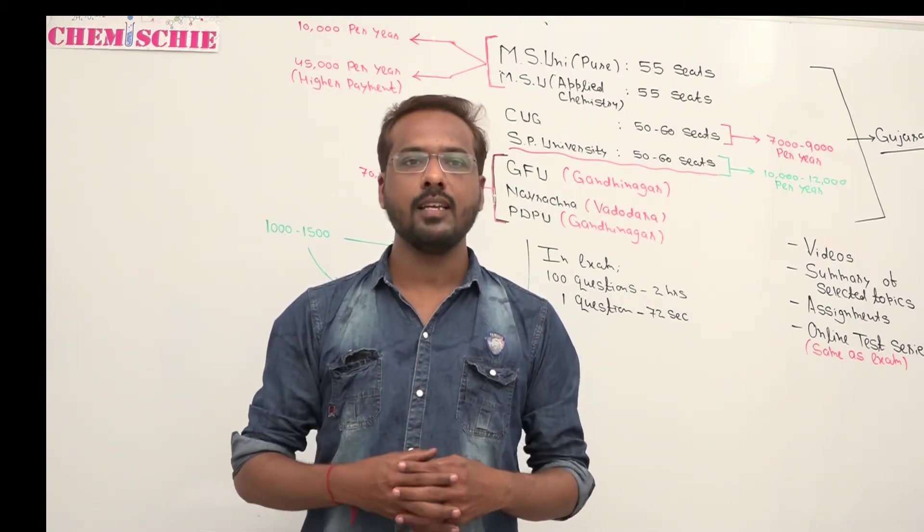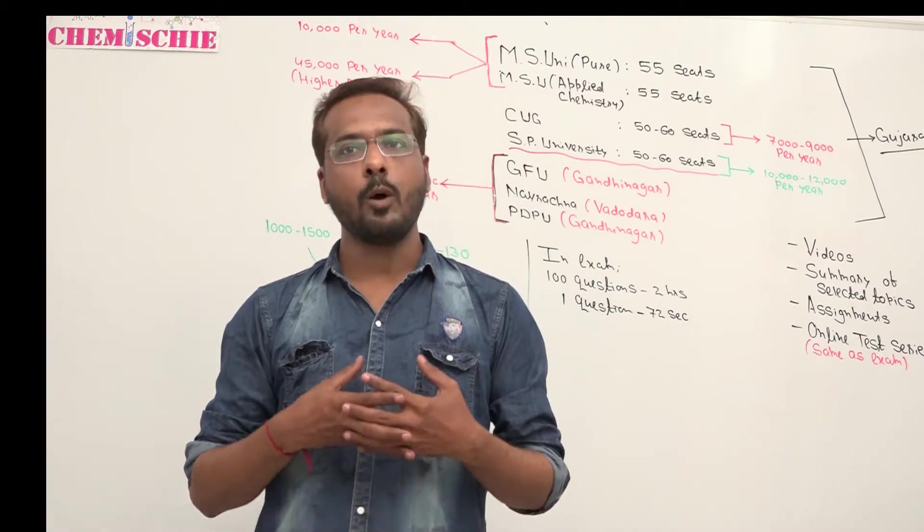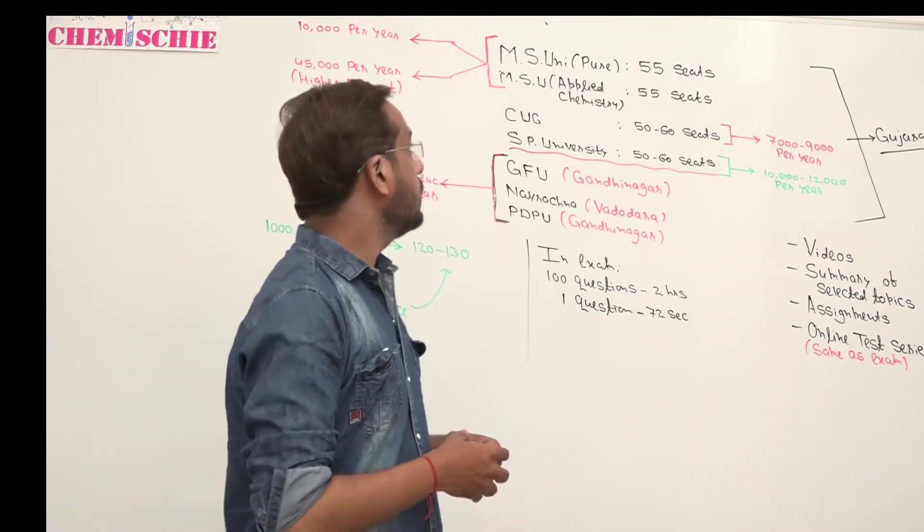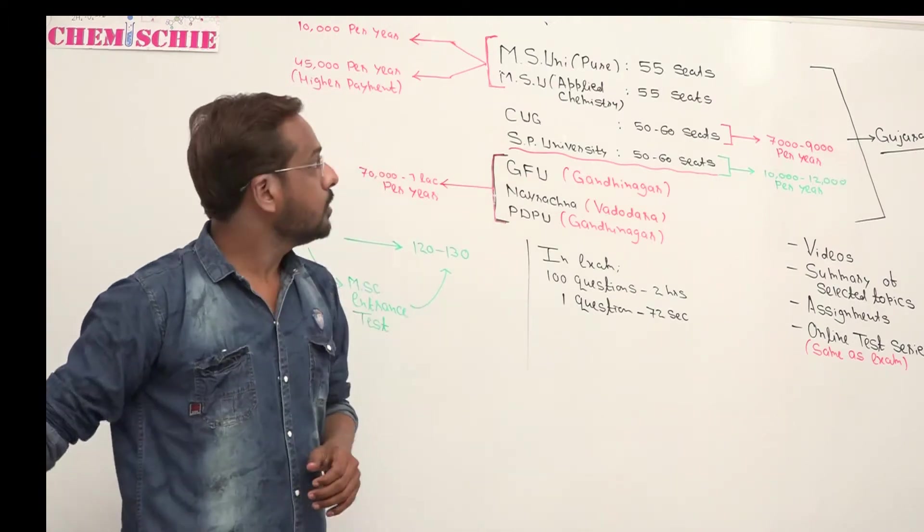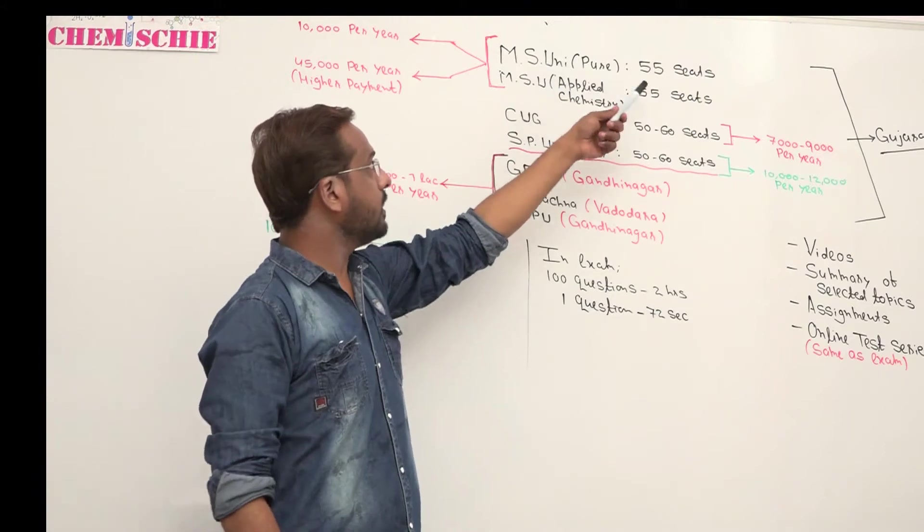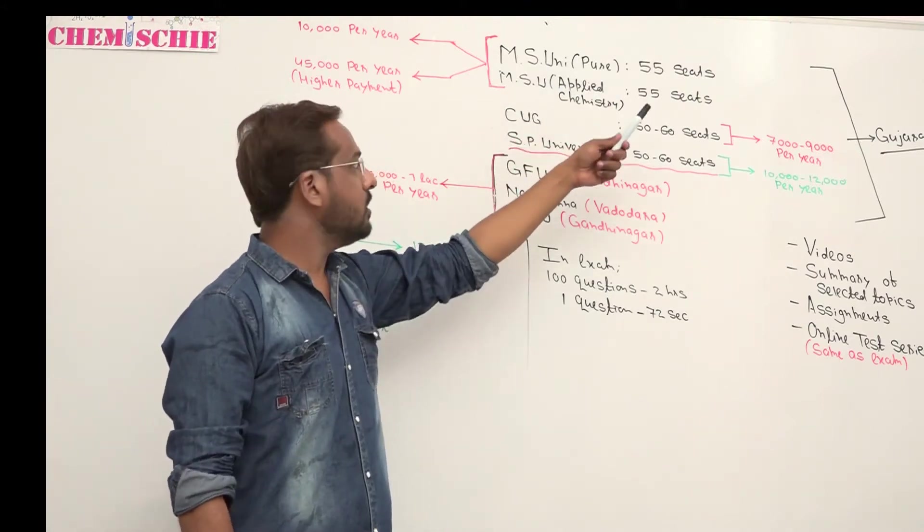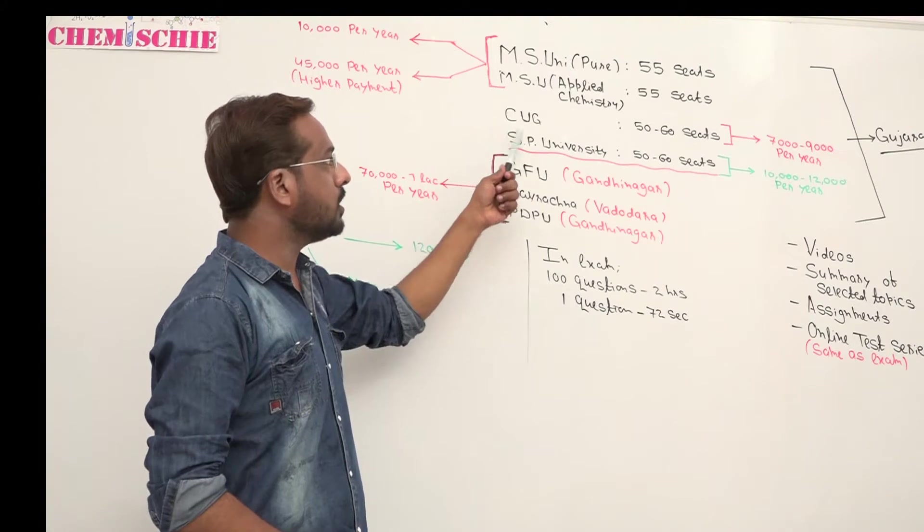We will discuss MSC entrance at MSC University. MSC University has 54 to 55 seats. CUG, Central University of Gujarat, has 56 seats available.